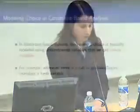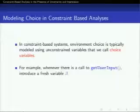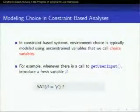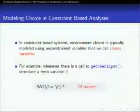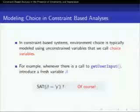To deal with these problems that arise from uncertainty and imprecision, many sound program analysis systems — and in particular constraint-based systems — will typically model environment choice by introducing fresh, unconstrained variables. In this talk, we're going to refer to such variables as choice variables. Whenever there's a call to a function like get_user_input, we're just going to make up some fresh variable beta. Then, if someone asks, 'Is it possible that beta is equal to the character y?' — the answer is of course yes, because I don't know what the user input is.